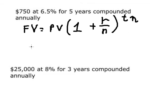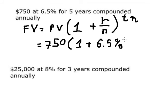Now we can apply the formula to the first problem. We have present value of $750, interest rate of 6.5% compounded annually. Annually means n equals 1, so we put 6.5% here. T is 5 years, so we put 5 here. When we calculate this, we get $1,027.56, and this is the final answer.